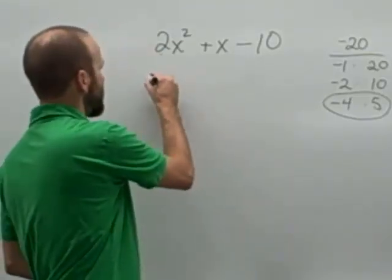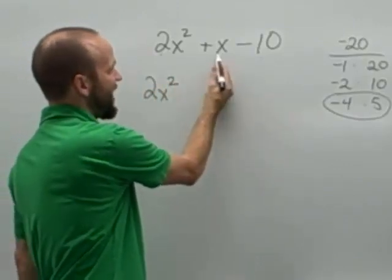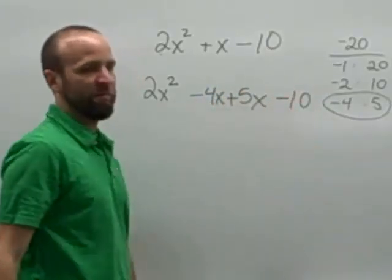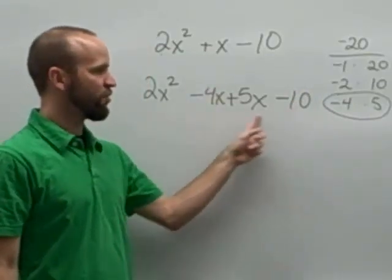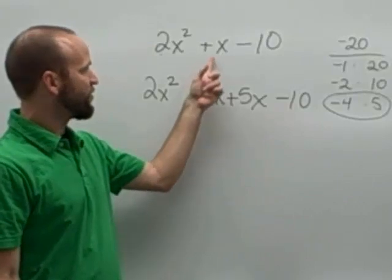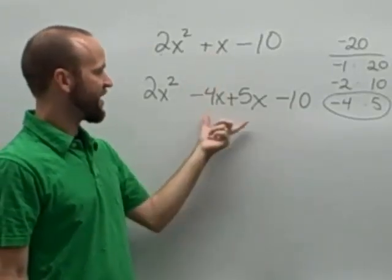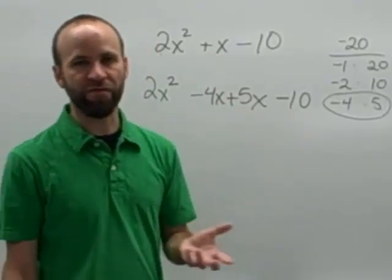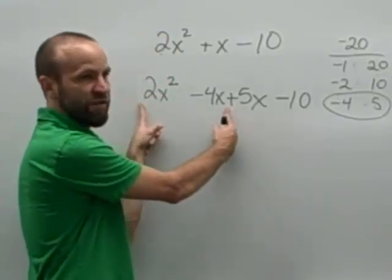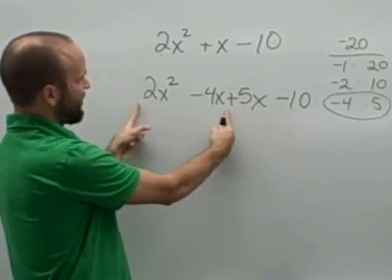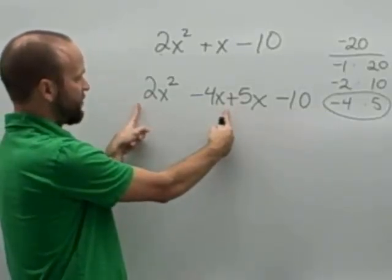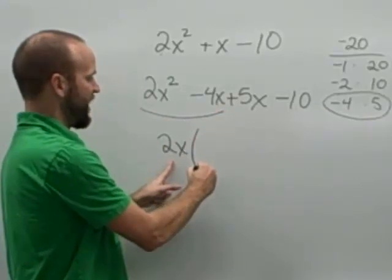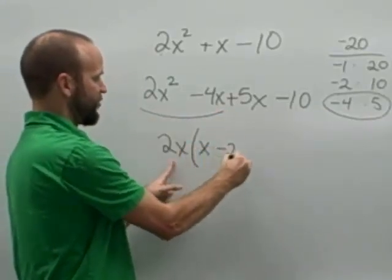What we are going to do is rewrite this trinomial. Instead of writing x as the middle term, I'm going to write negative 4x plus 5x. The first and last term stay the same. Our goal here is to write our trinomial broken up into four terms by rewriting the middle term. Positive x is the same as negative 4x plus 5x. Then once you have four terms, we apply a process called factor by grouping. We group together the first two terms and look for the greatest common factor. The greatest common factor of 2x squared and negative 4x would be 2x.